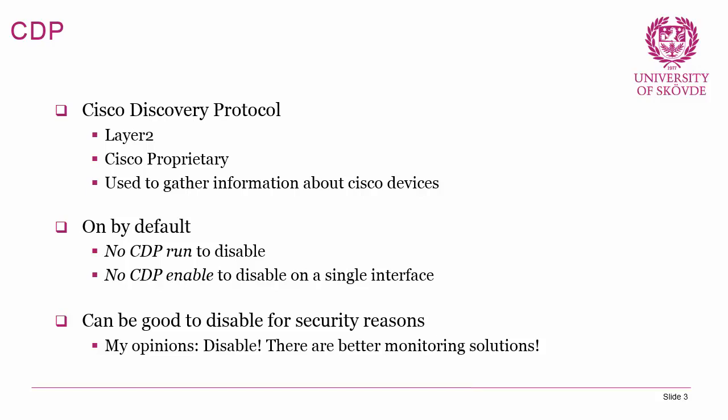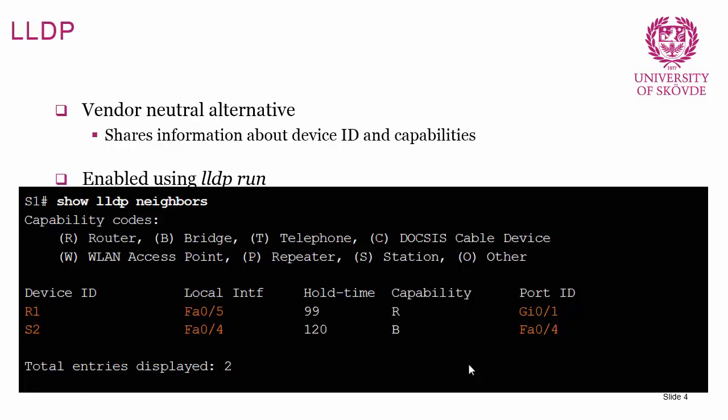CDP is not a great monitoring solution and can be a security risk. If you plug into a CDP-enabled network you can map the entire topology of that network just from one device. There is also a vendor-neutral alternative called LLDP, which does basically the same thing — sharing device ID and capabilities. You enable it using 'lldp run' and can do 'show lldp neighbors' to see neighboring devices, including device ID, hostname, and capabilities like R for router or B for bridge.